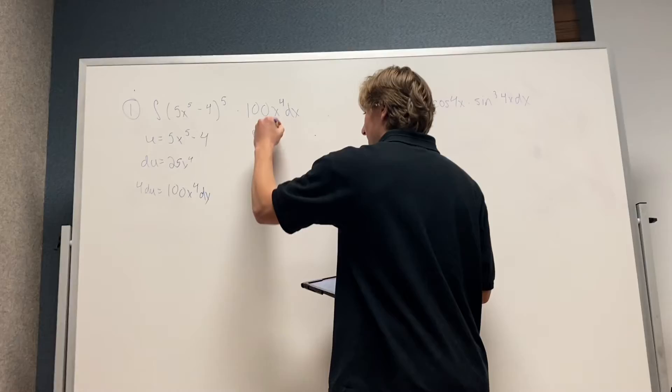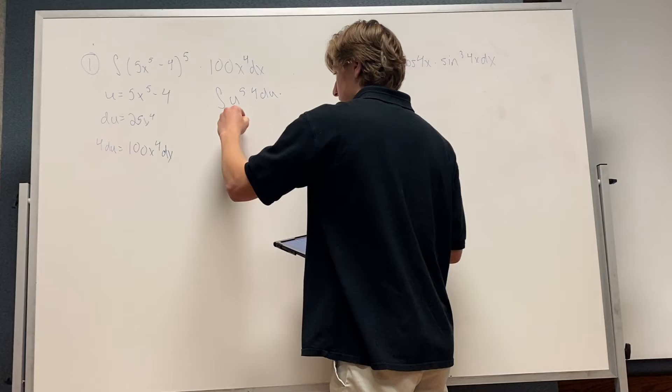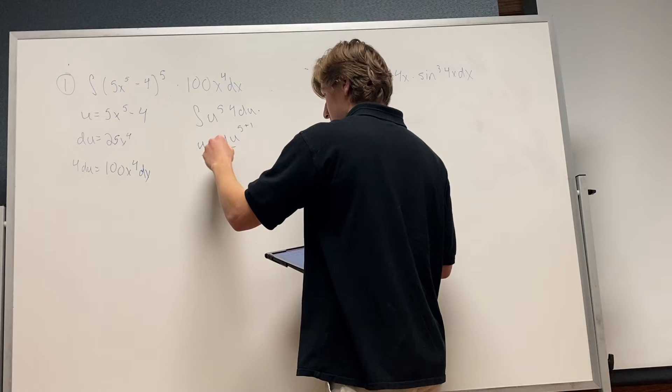And then one simple step after that. So it's y equals 4, and then u, and then 5 plus 1, and then put that under 6, and then plus c. Very good.